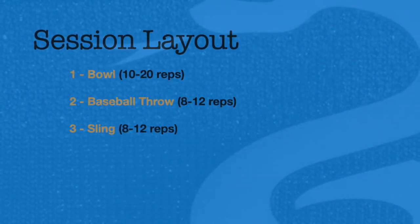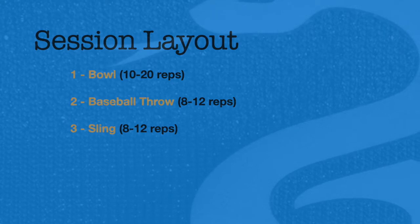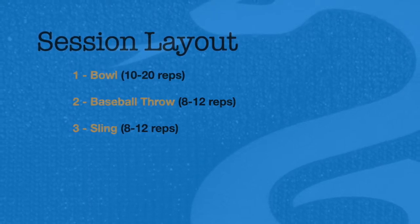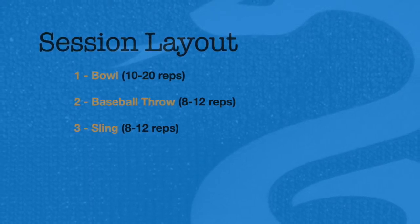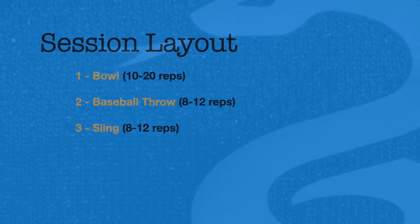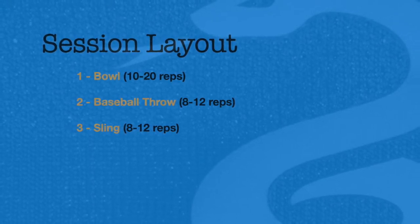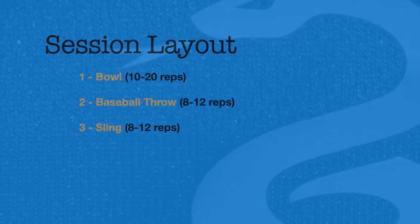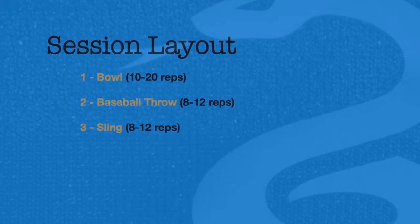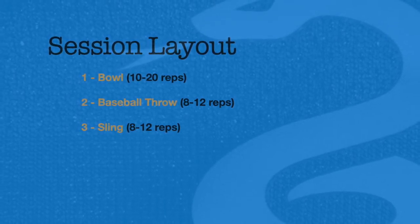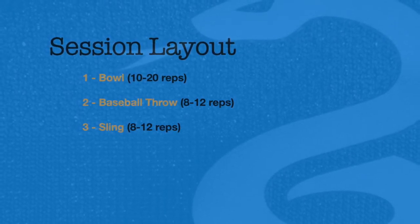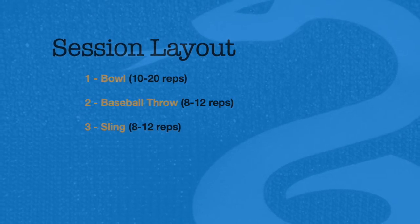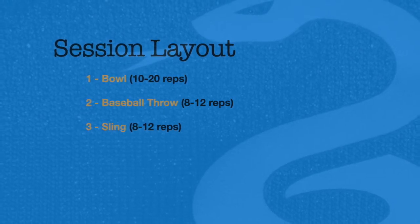Hey, what's going on everyone. Today we're going to show you the three types of distribution from your hands that you'll use as a goalkeeper. They are the bowl, the baseball throw, and the sling. Each are used depending on the distance you need the ball to travel. In this video we'll go through the technique of each and the ideal moments to use them.